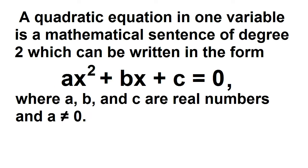What is a quadratic equation? A quadratic equation in one variable is a mathematical sentence of degree 2, which can be written in the form ax squared plus bx plus c equals 0, where a, b, and c are real numbers and a is not equal to 0.